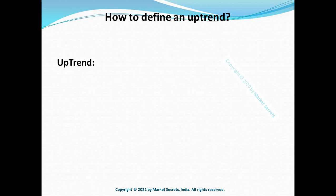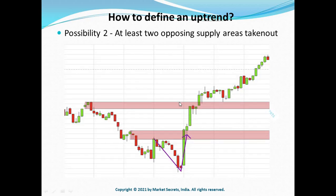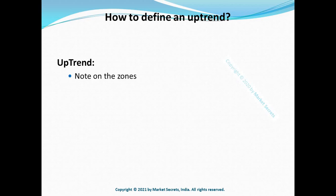There is one important note to remember while talking about zones. As mentioned in earlier lessons, we can consider only valid demand and supply zones when applying these rules. Always ask yourself: what has this imbalance or potential demand or supply zone accomplished? Has it taken out an opposing supply or demand zone? Just because price takes out two supply zones doesn't mean it is an uptrend — those must be valid zones. You cannot blindly mark zones without rules and call it an uptrend. Only valid zones that follow the rules should be considered when defining an uptrend.